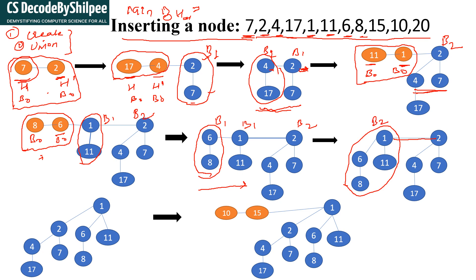After the merging, the degree is 2. But there are still 2 binomial trees with the same degree 2, so we perform another union operation. After performing this union, we get a final combined tree of order B3.